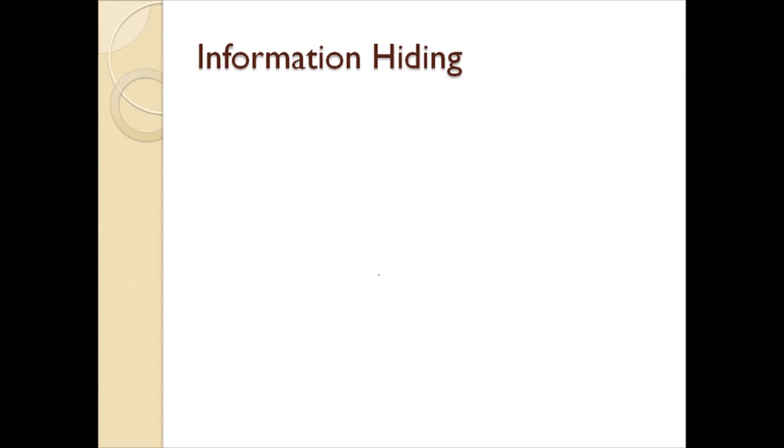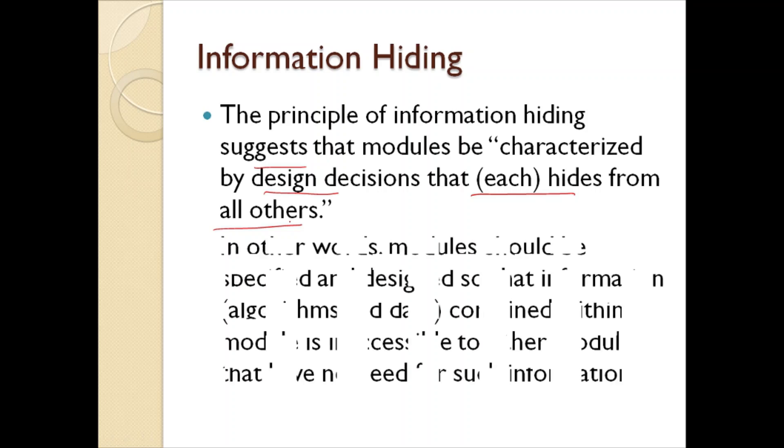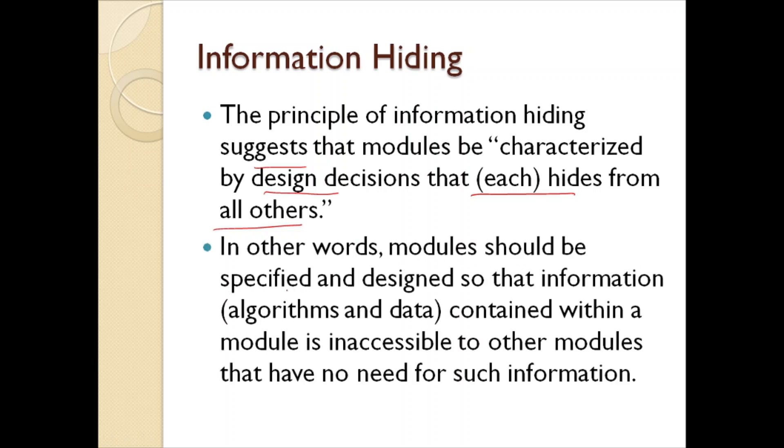Next is Information Hiding. The principle of information hiding suggests that modules be characterized by design decisions that each hide from all others. How to obtain the best set of modules are covered under this. In other words, modules should be specified and designed so that information, that is algorithms and data contained within a module is inaccessible to other modules that have no need for such information.